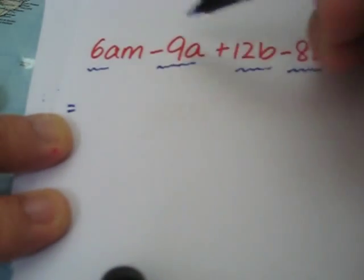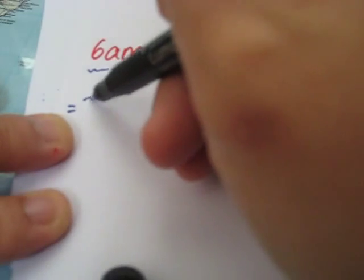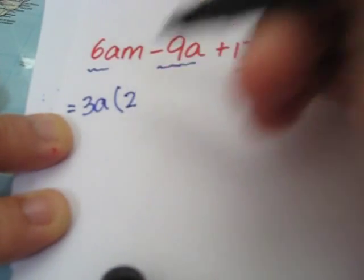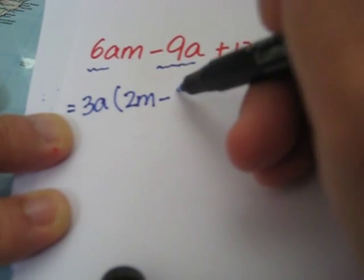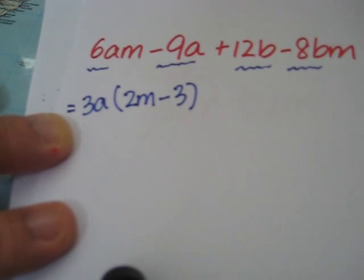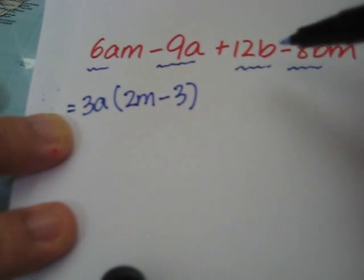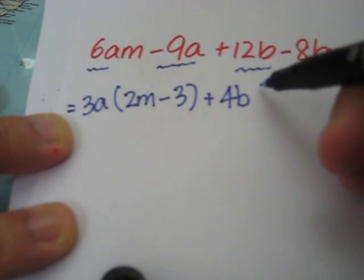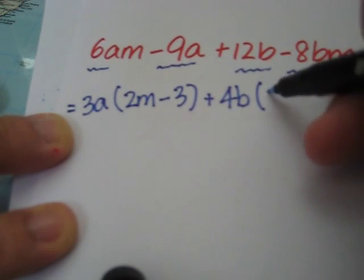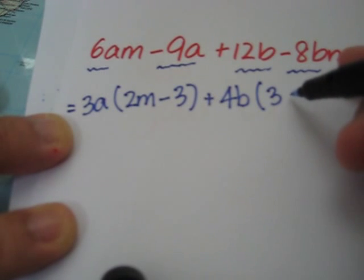Let's remove the common factor from the first two terms, which is 3a. And now, we are left with 2m minus 3. Next. Let's remove 4b. What's left behind? 3 minus 2m.